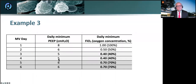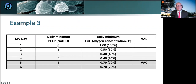In example three, the VAE starts with the first two days of mechanical ventilation. This example doesn't meet the PEEP criteria, but in this case there is a 30% increase in FiO2 after two stable days. This is when you mark your VAC.